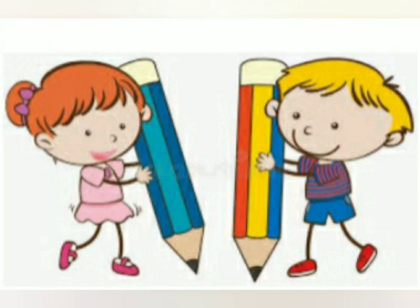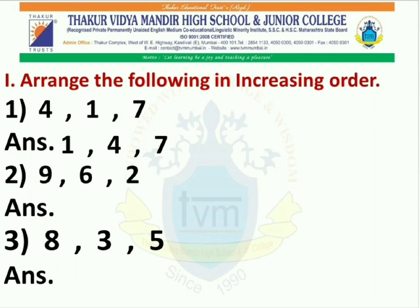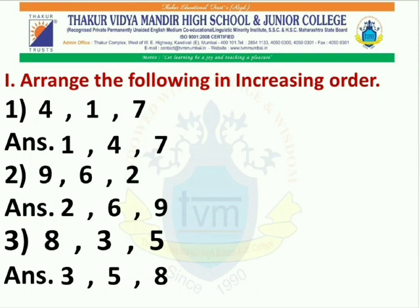Students, through this explanation, we understood this chapter easily. Now, be ready with a pencil and a book to solve some exercises. Are you all ready? Come, let us begin. In exercise 1, you have to change the following numbers in increasing order. In set 1, the numbers are 4, 1, and 7. When you change it into increasing order, we get 1, 4, and 7. In set 2, the numbers are 9, 6, and 2. After changing it into increasing order, we get 2, 6, and 9. In set 3, we have 8, 3, and 5. After changing it into increasing order, we get 3, 5, and 8.